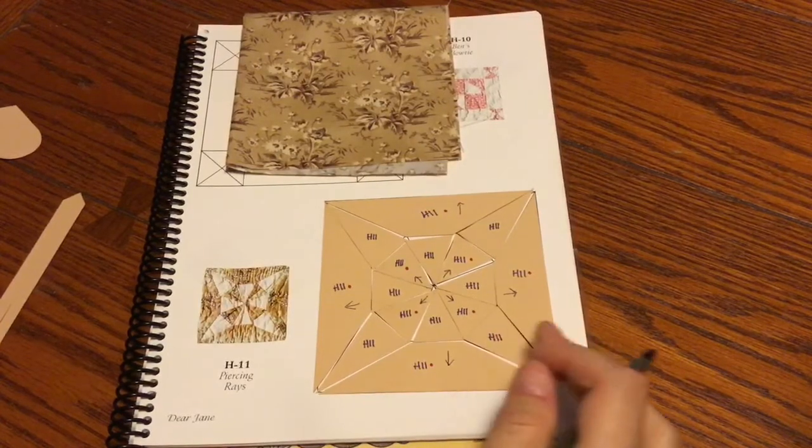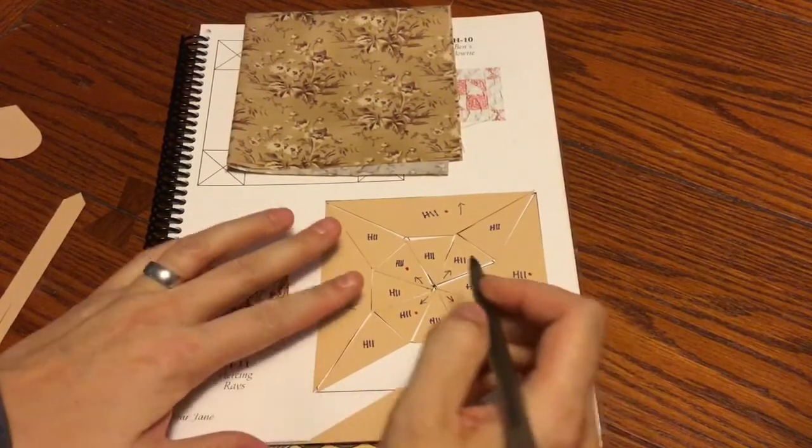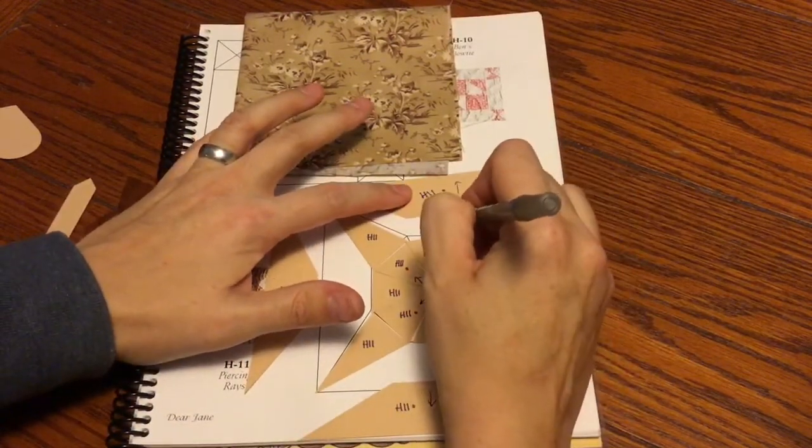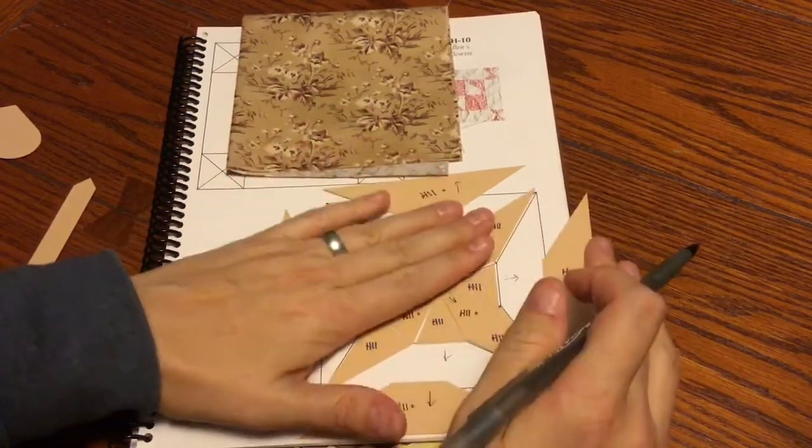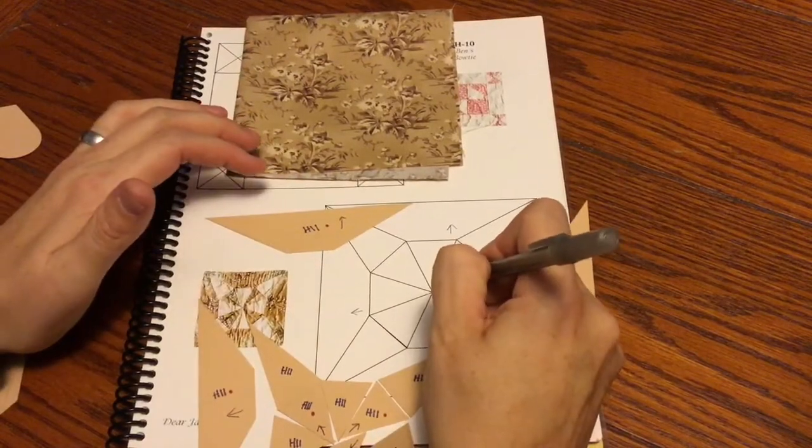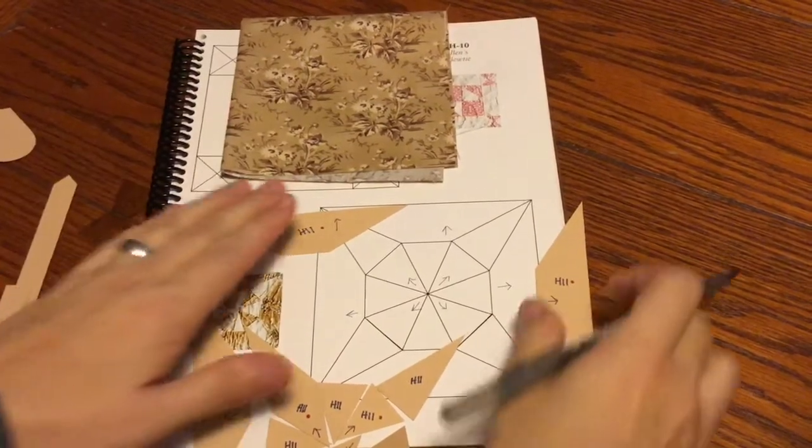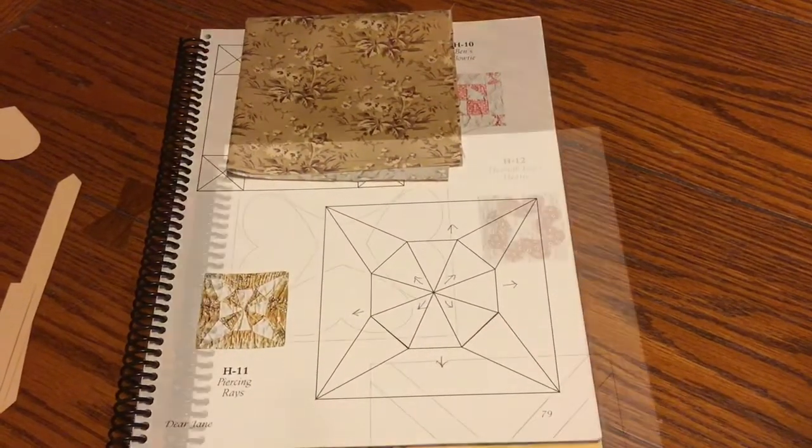And so then now that I've got this labeled, I'm going to label this with the same arrows so I remember how I did it. Because again, I don't know exactly how long it's going to take me to get to these blocks. So these go like so, and then we are on, once I baggie this, we are on to H12.